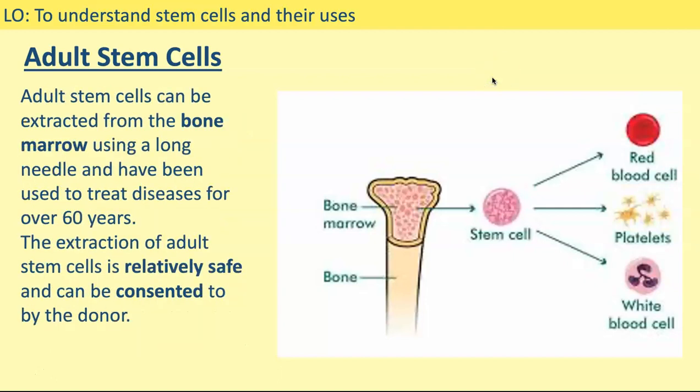Adult stem cells can be extracted from the bone marrow using a long needle. These types of stem cells have been used to treat diseases for over 60 years — longer than embryonic stem cells have been used — but it is still a relatively new kind of treatment. Extraction of adult stem cells is relatively safe, and you can actually ask an adult for consent to extract their stem cells, so you can get consent from the donor.